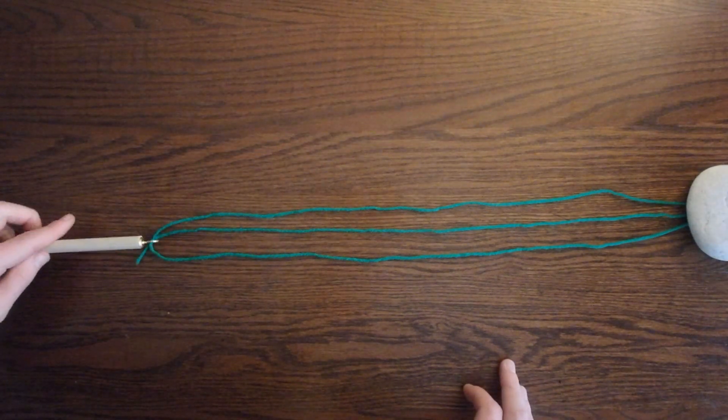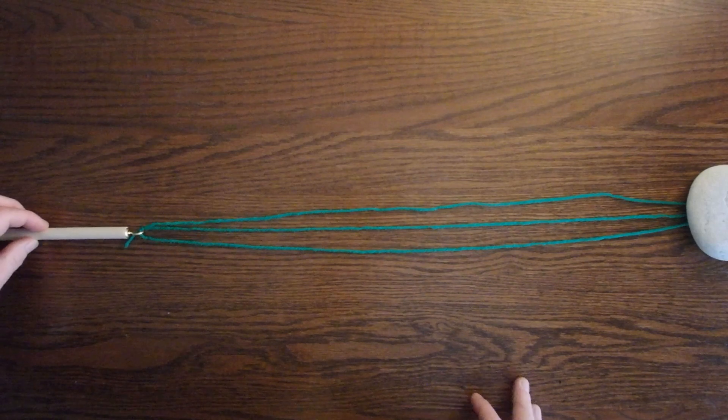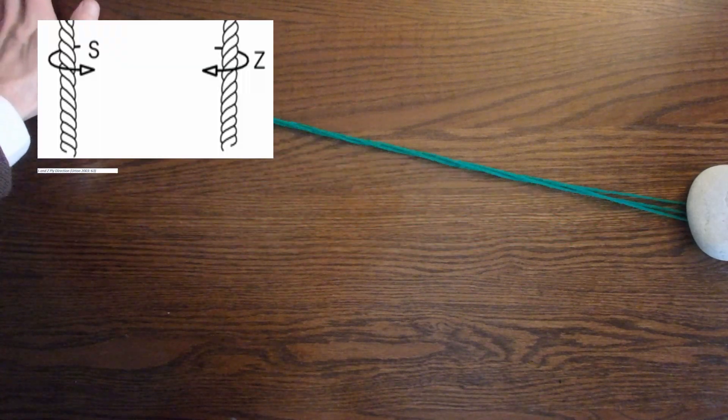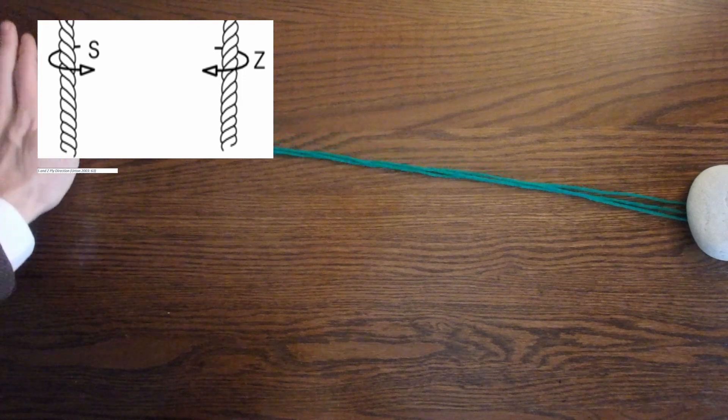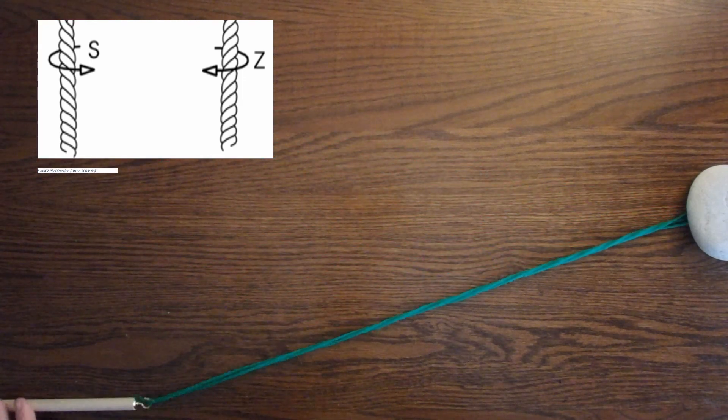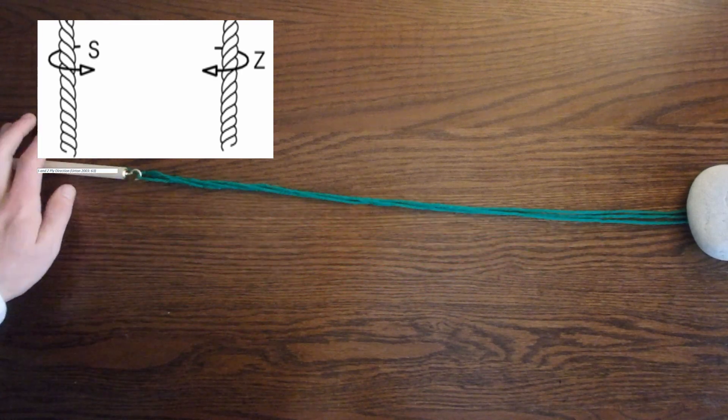I'm going to use this rock to hold down the chord while I build up tension in the yarn by rolling the spindle. You can also use your hand if this is easier for you. The direction in which you ply your chord was used by Kipu Keepers as a binary sign distinguishing two categories from one another.